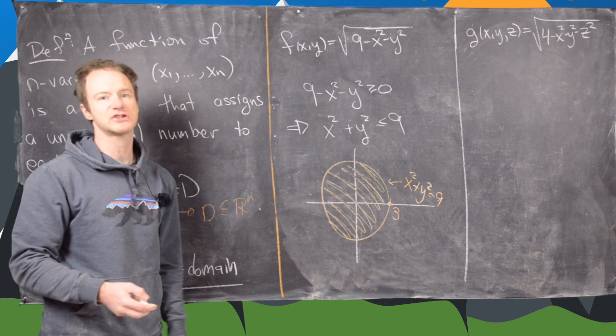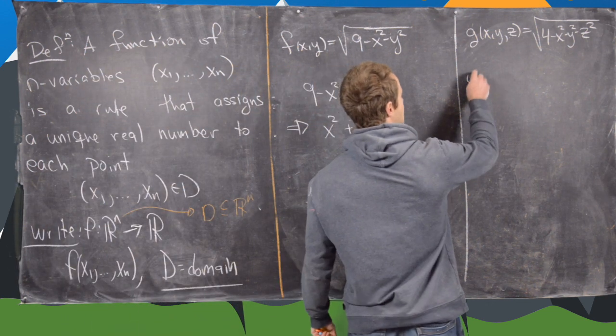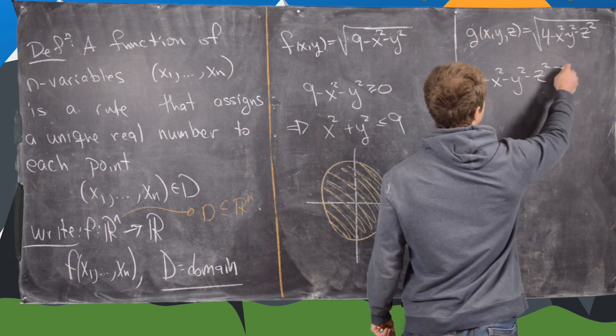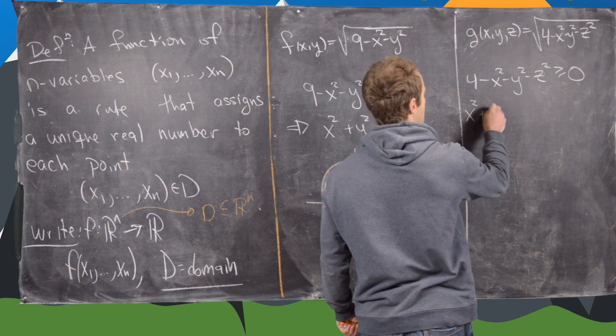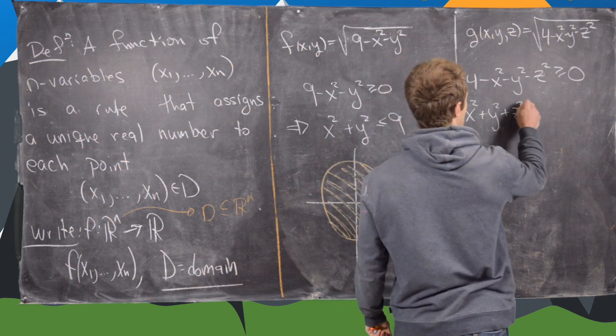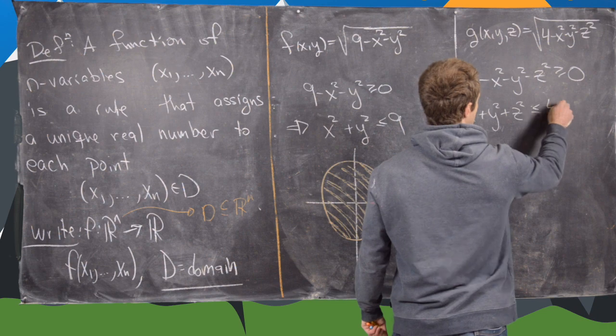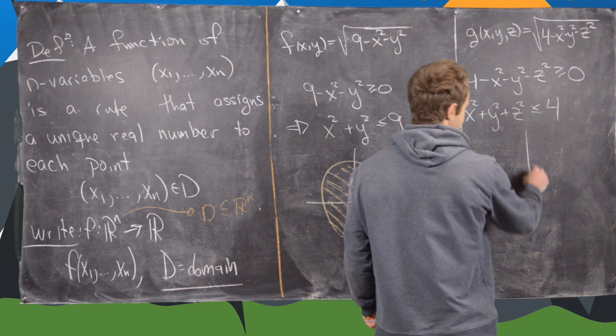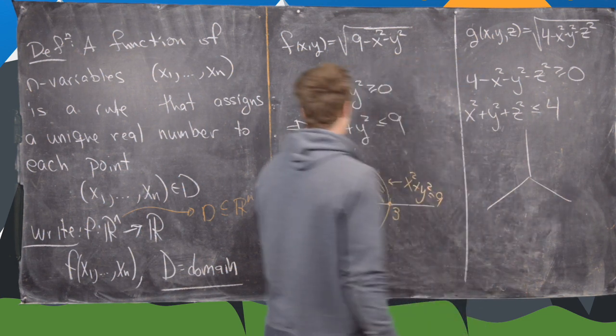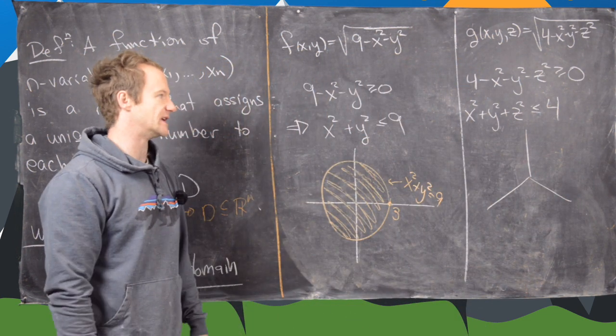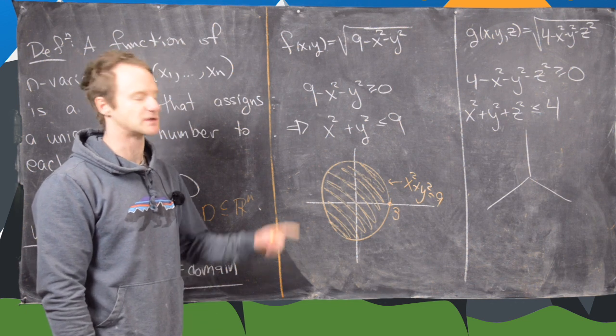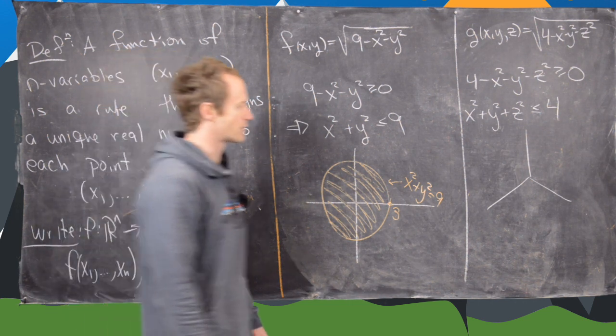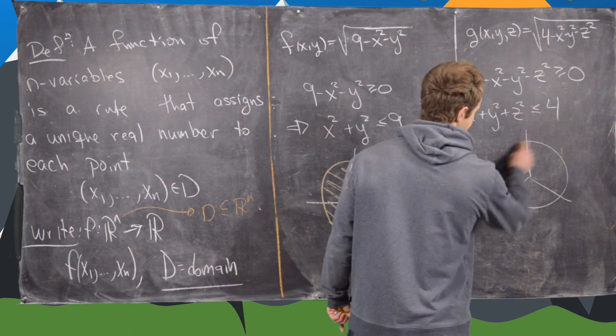Now let's look at the three-dimensional version of this. Again, we're going to need everything under the radical to be bigger than or equal to 0, which is going to tell us that x squared plus y squared plus z squared has to be less than or equal to 4. But let's think about what that is. If x squared plus y squared equals 9 is a circle, x squared plus y squared plus z squared equals 4 is a sphere. And here the radius is 2, which is the square root of 4.